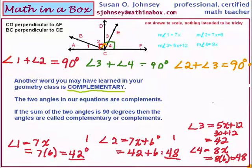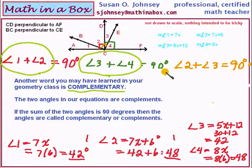Another word that you may have heard used in your geometry class is the word complementary. Two angles in our equations are complements because their sum is 90 degrees. If the sum of two angles is 90 degrees, then the two angles are called complementary or complements. So angle 1 and angle 2 are complements. Angle 3 and angle 4 are called complementary or complements. And angle 2 and angle 3 are complementary or called complements. Any two angles when added together, if they equal 90 degrees, then they are complementary or called complements.